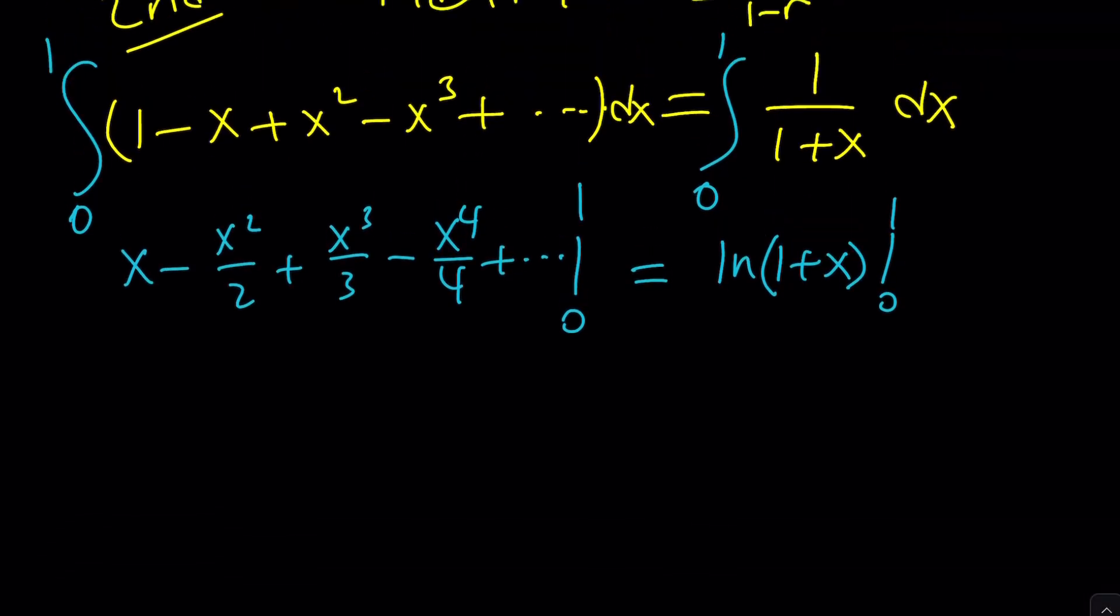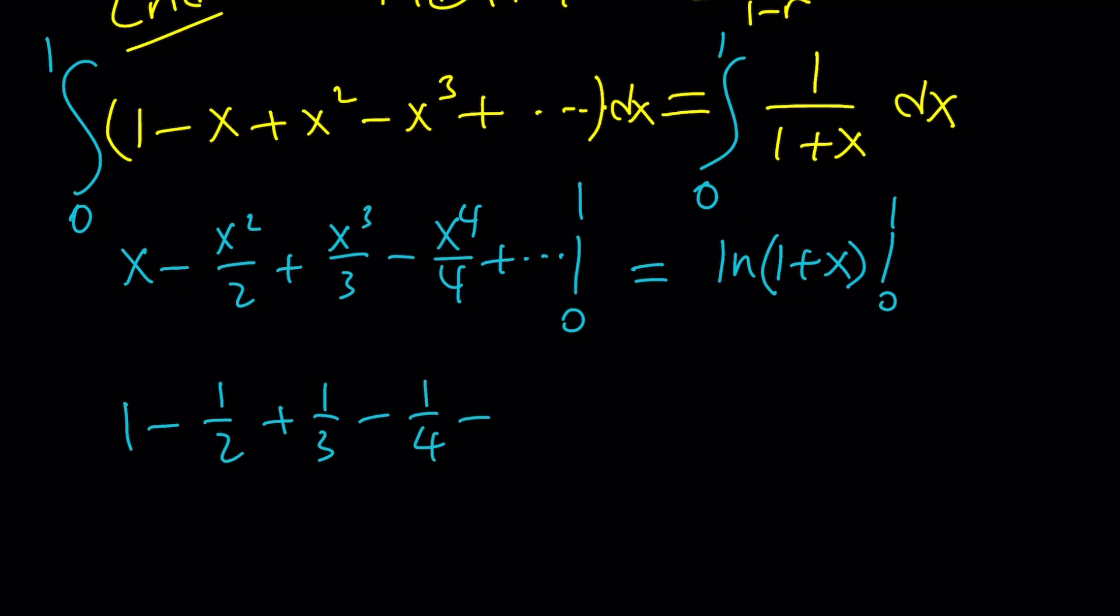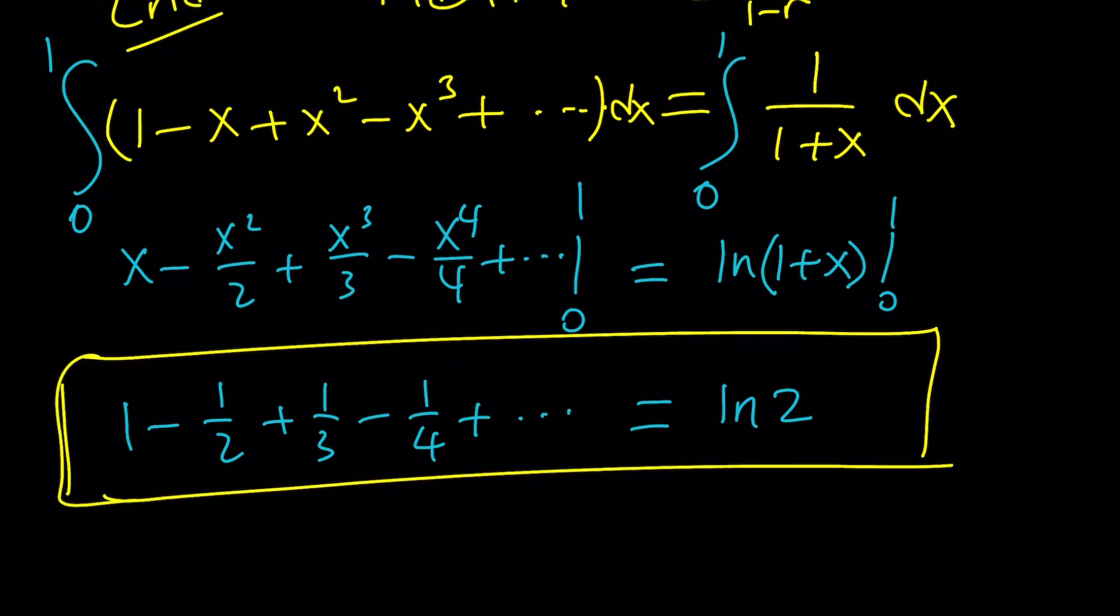Obviously, if you replace x with 0 on the left, you're going to get all 0s, so we don't care. Just use 1. x equals 1 is going to give us 1 minus 1 half plus 1 third minus 1 fourth, so on and so forth. Does that look familiar? And then right-hand side is going to give us ln 2 minus ln 1, which is 0, so we don't have to worry about it. So the sum that we were trying to evaluate actually sums up to ln 2, which is the natural log of 2, which is a very special number.